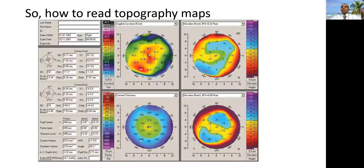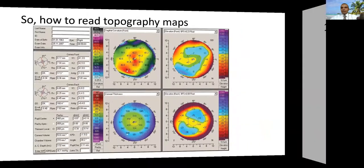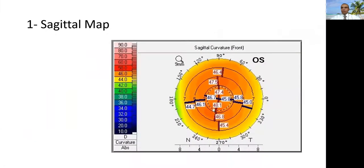As you can see, there is so much information that we are trying to simplify today in a clinical stepwise approach. First of all, we are talking about a sagittal map, which is the ordinary topography map. Here you can see as a scale, starting from cool colors to steep colors into red colors. Here's the powers of the cornea, reading about 47 diopters.